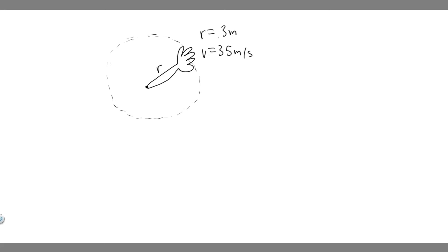In this problem we're told a baseball pitcher brings his arm forward during a pitch, rotating the forearm about the elbow. The velocity of the ball in the pitcher's hand is 35 meters per second. The ball is 0.3 meters from the elbow joint. What is the angular velocity of the forearm?